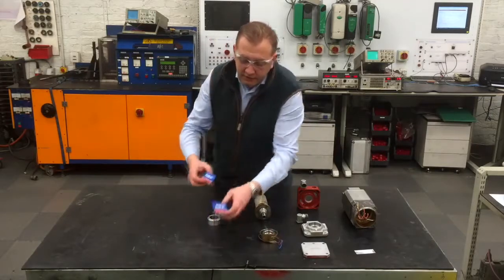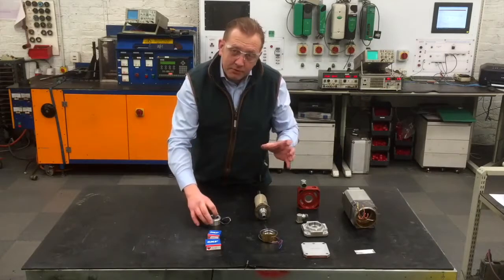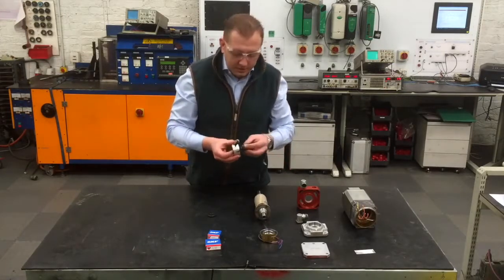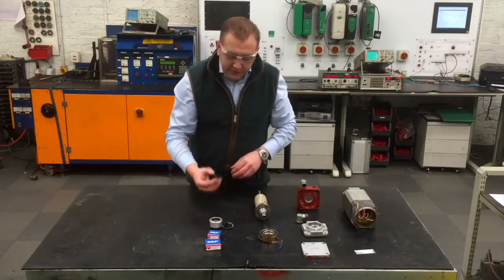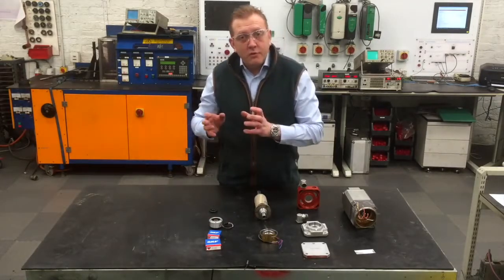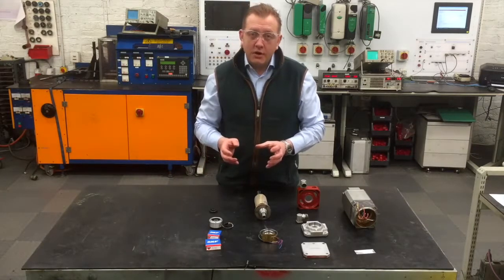What we will do now is fit two new bearings to the rotor. We will assemble the motor, we have got a new resolver here which will fit and align. We will then fit the all important shaft seal, assemble the motor complete, and perform a light test first of all before we perform a full load test on our load test rod.